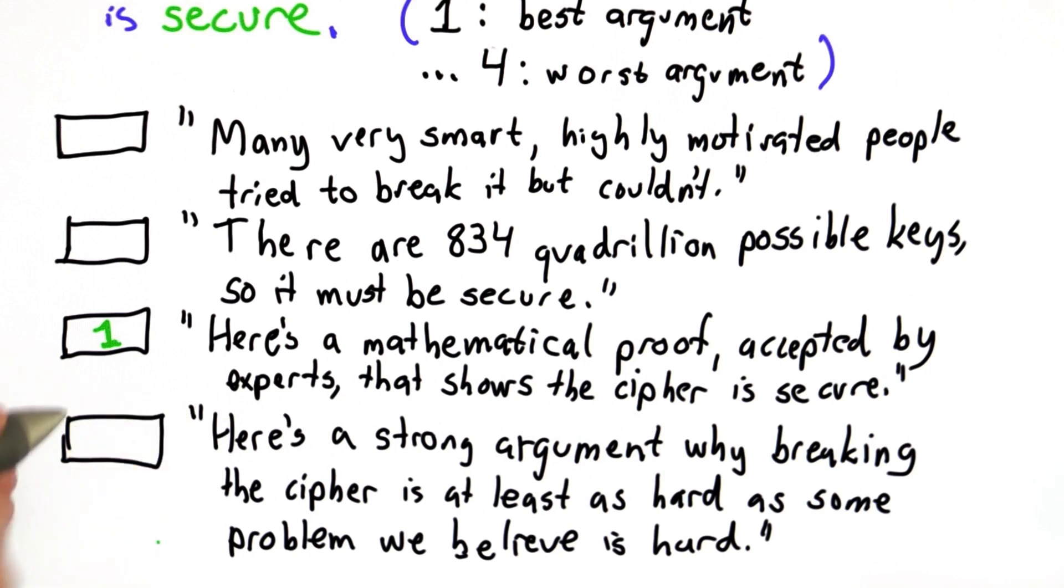The next best one is the last one, which is to show in a formal way why this cipher is at least as hard as some other problem, and we'll talk about reduction proofs more later in this course.